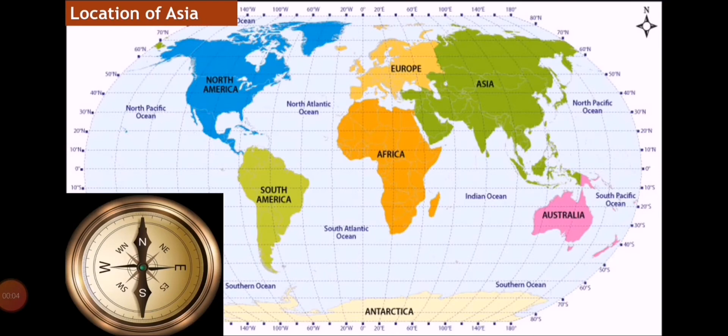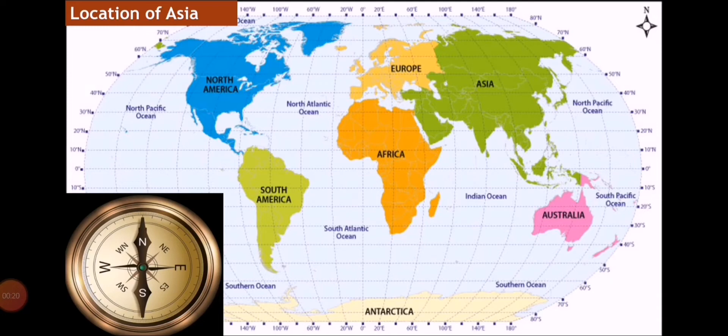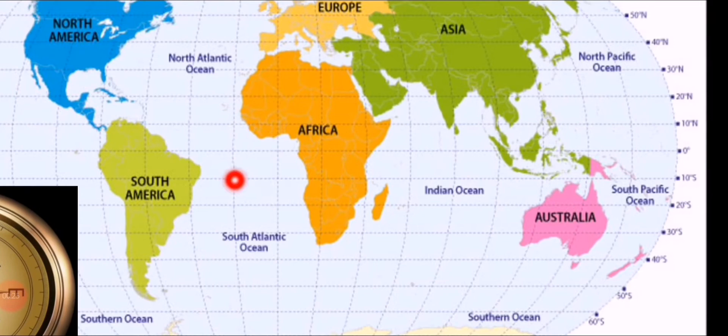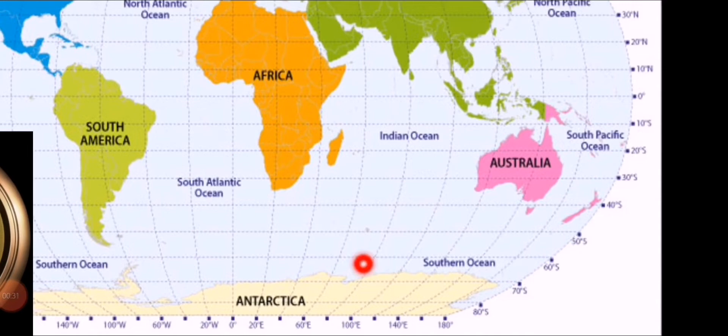Before we discuss today's lesson, let's quickly recap the location of Asia. In this world we have seven continents: North America, South America, Africa, Europe, Asia, Australia, and Antarctica. We Pakistanis live in Asia, so we are Asians. China is also a part of Asia as well.